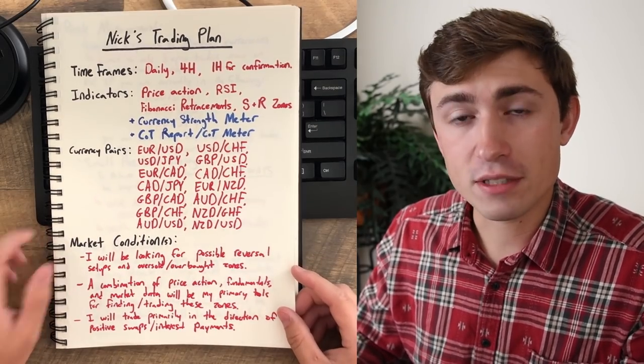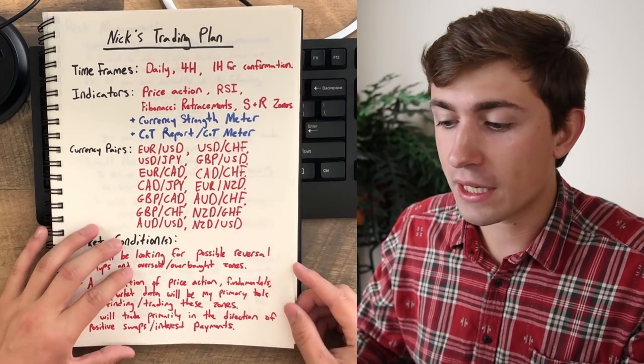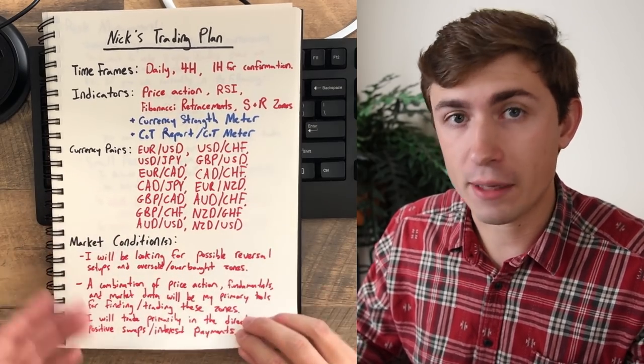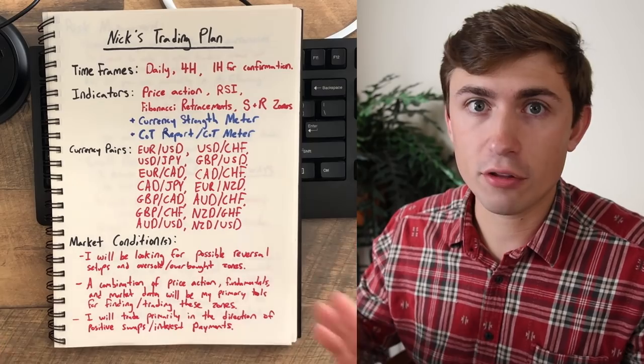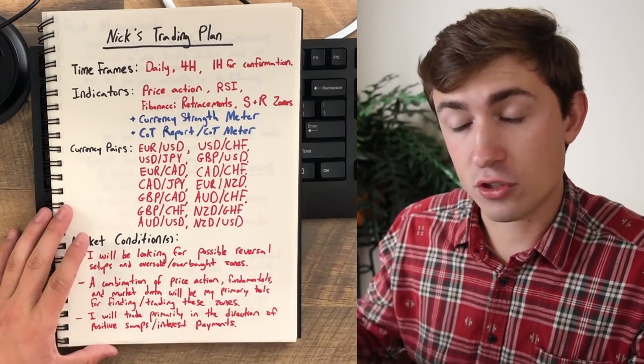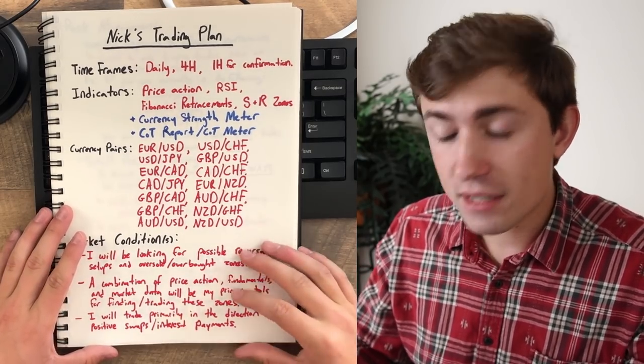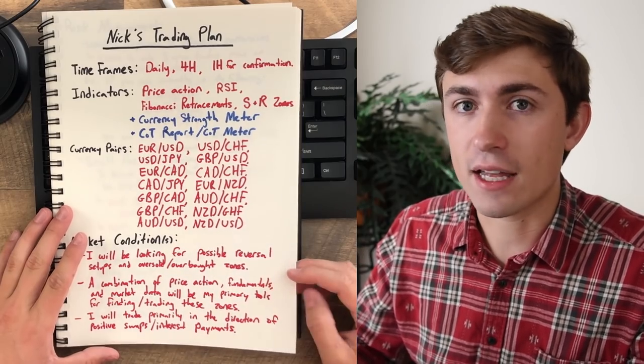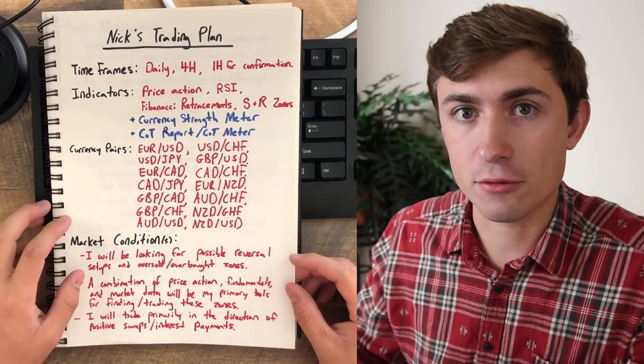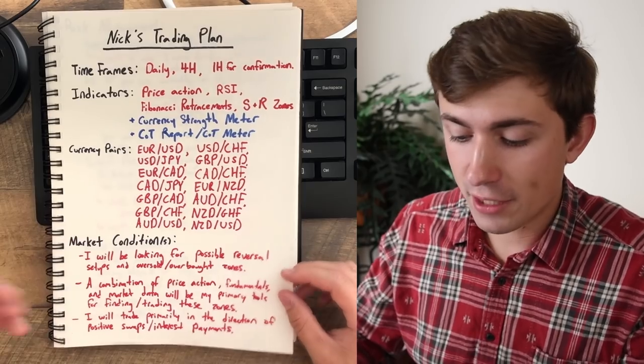And also I will trade primarily in the direction of positive swaps or interest payments. Part of my strategy involves collecting positive swaps and building kind of the account through interest over time. Even if this brings in just one to 3% per year, that's still something worth kind of doing for me in my own trading, because it also kind of limits the expenses that I get deducted from my account due to trading in the other direction.